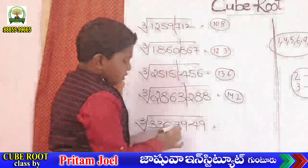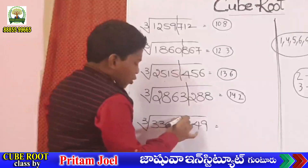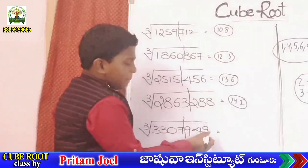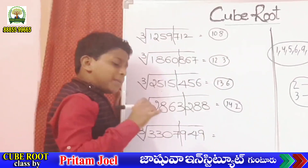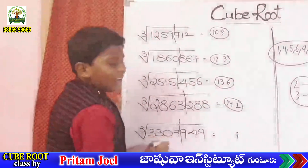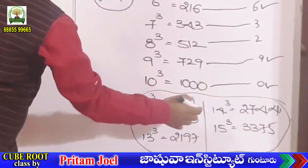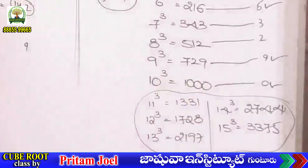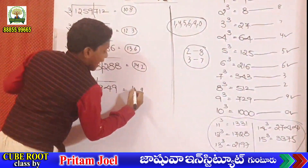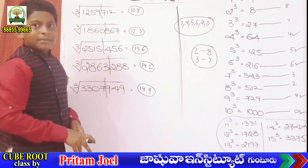Cube root of 3307949: remove last 3 digits. The unit place is 9, so the answer unit place is also 9. Remaining 3307 is bigger than 2744, means 14 cube. Cube root cancels, so 14. This answer is 149. Thanks, bye!